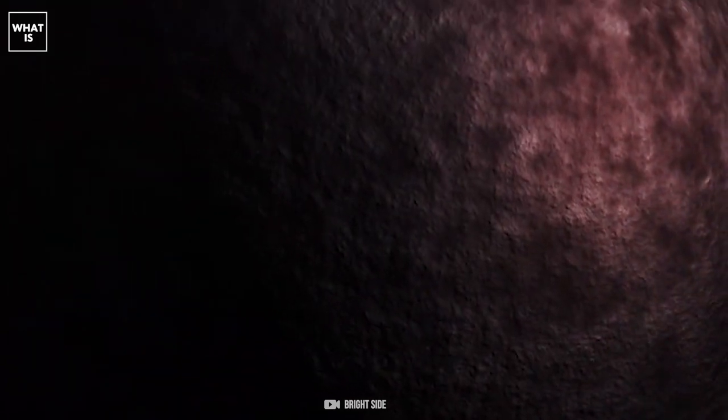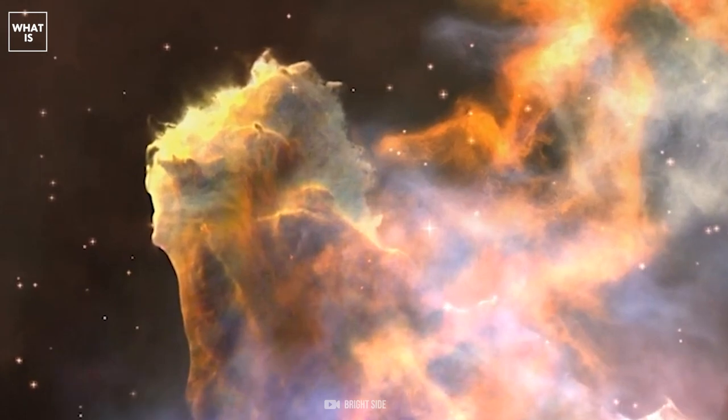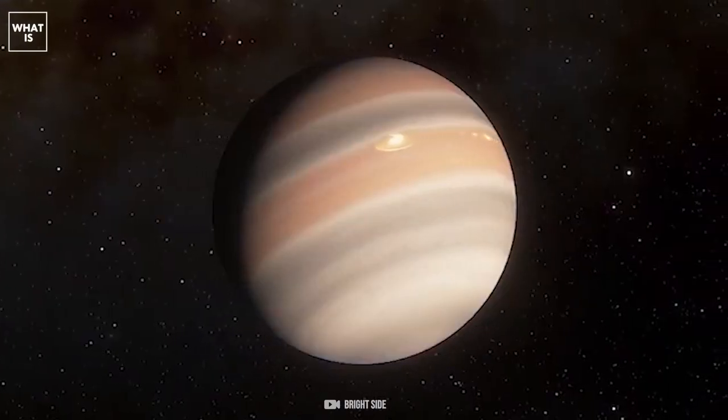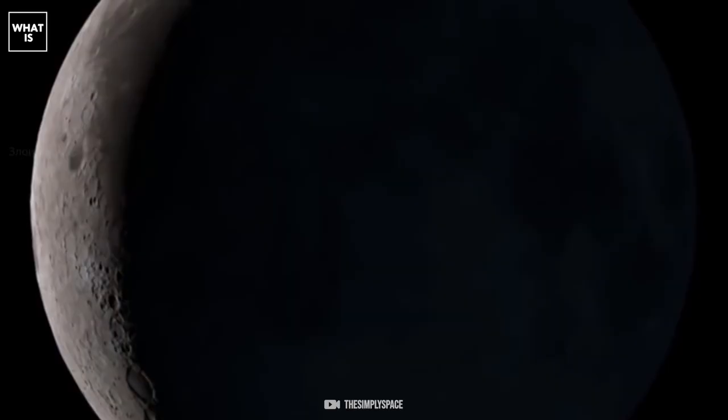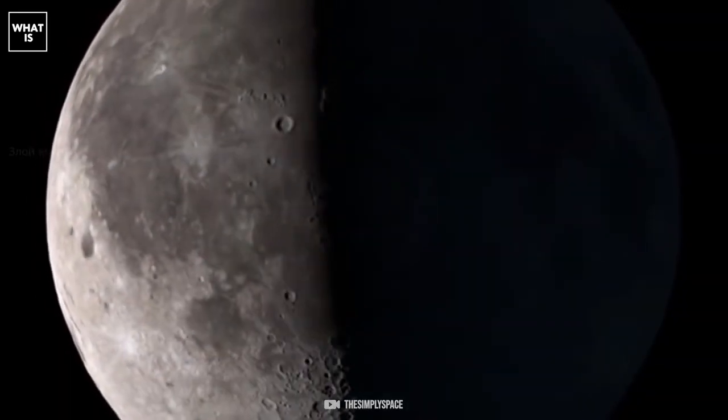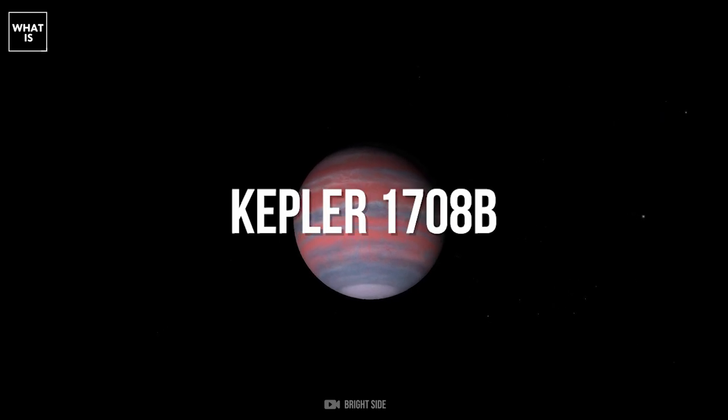Scientists continue to explore the object as it is of great interest to science. It was possible to detect an exomoon outside the Milky Way thanks to the work of the Hubble and Kepler telescopes. The discovered moon revolves around the planet Kepler-1708b, reminiscent of Jupiter.